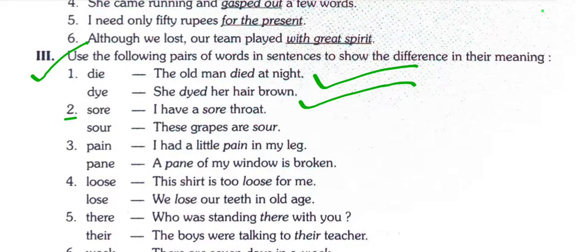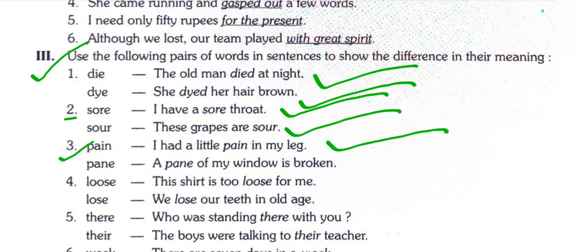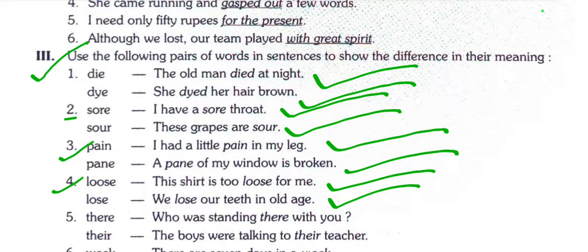Sore: 'I have a sore throat.' Sour: 'These grapes are sour.' Pen: 'I had a little pain in my leg.' Pane: 'A pane of my window is broken.' Loose: 'This shirt is too loose for me.' Lose: 'We lost our teeth in old days.'